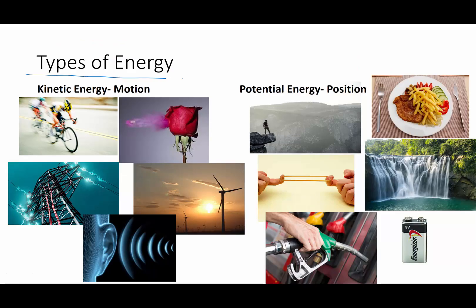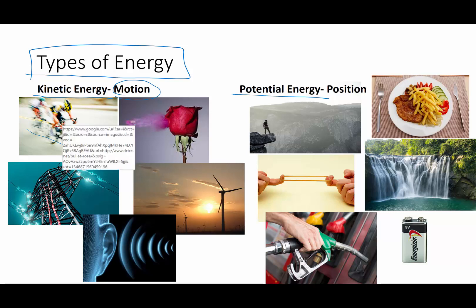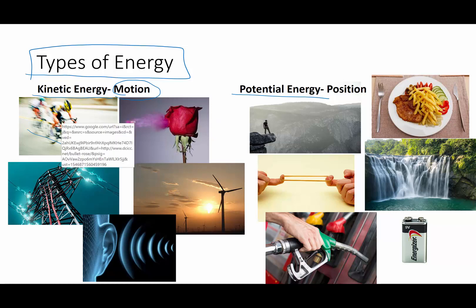Now there are two big broad categories of energy: kinetic energy and potential energy. We're going to spend some time later giving you some math about each, but let's describe them both before we get too far along. Kinetic energy is energy something possesses due to its motion. This bicycle has energy just because it's in motion. The bullet, which is such a small little thing, has a lot of energy because it's moving.